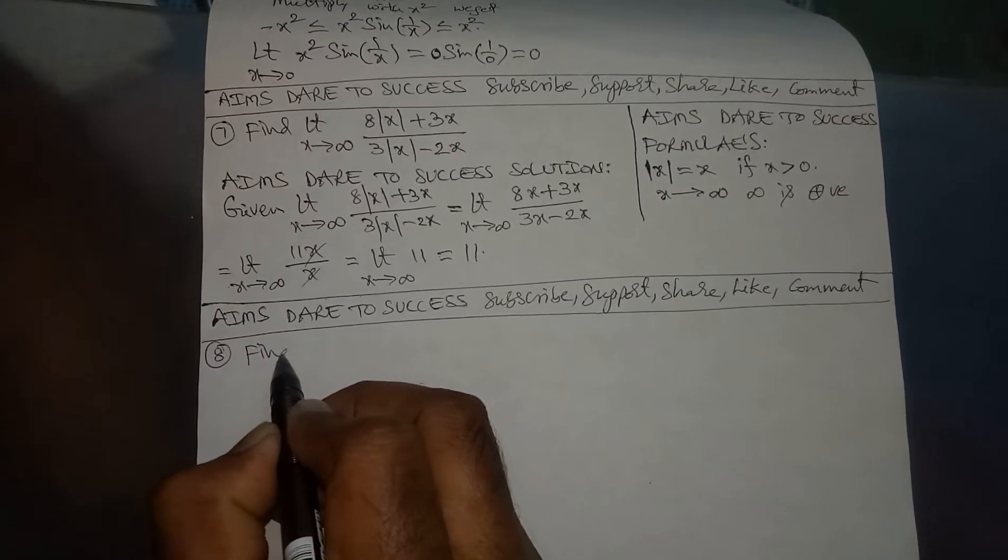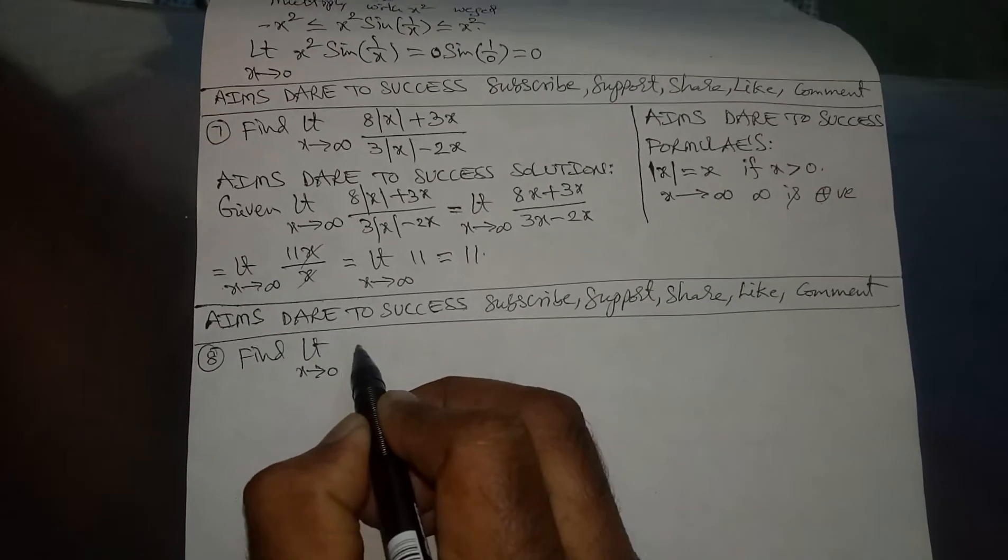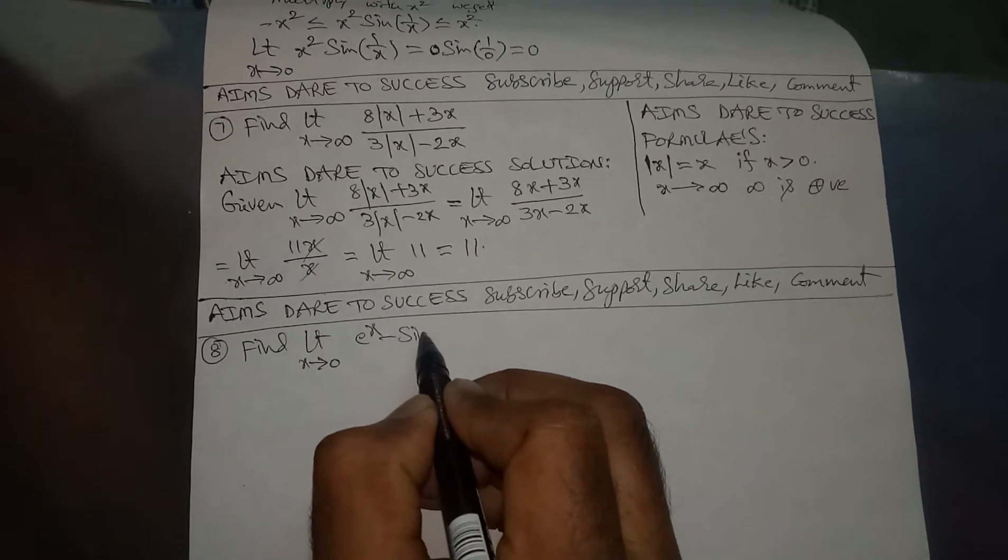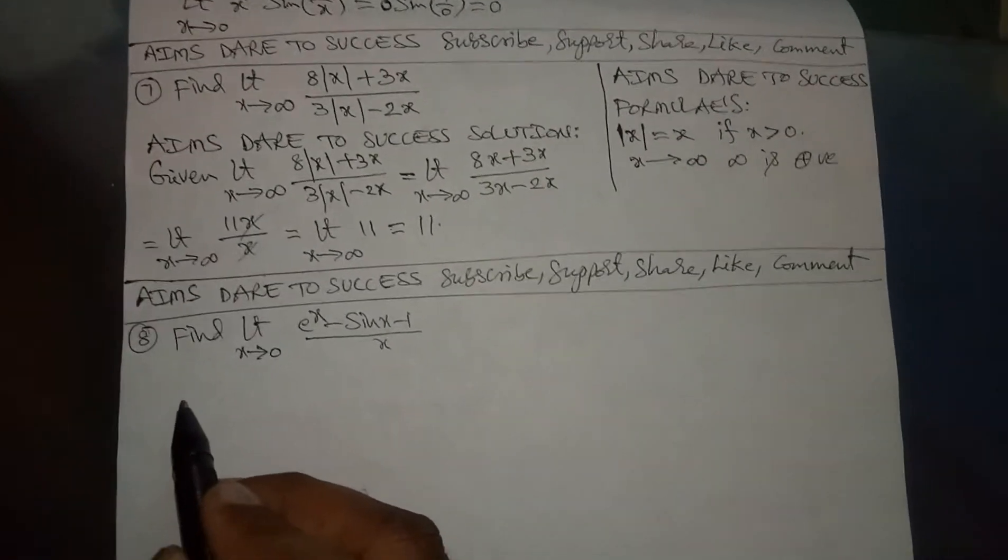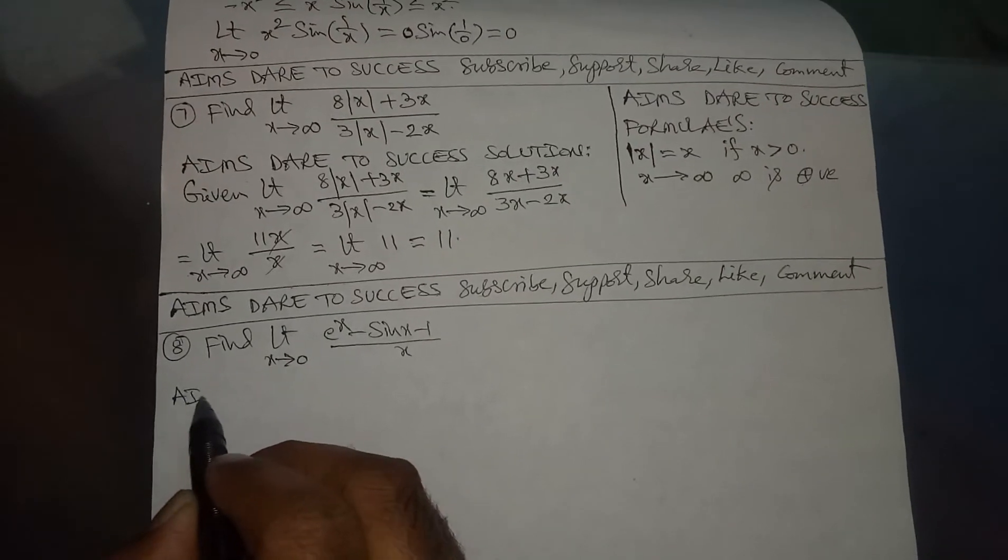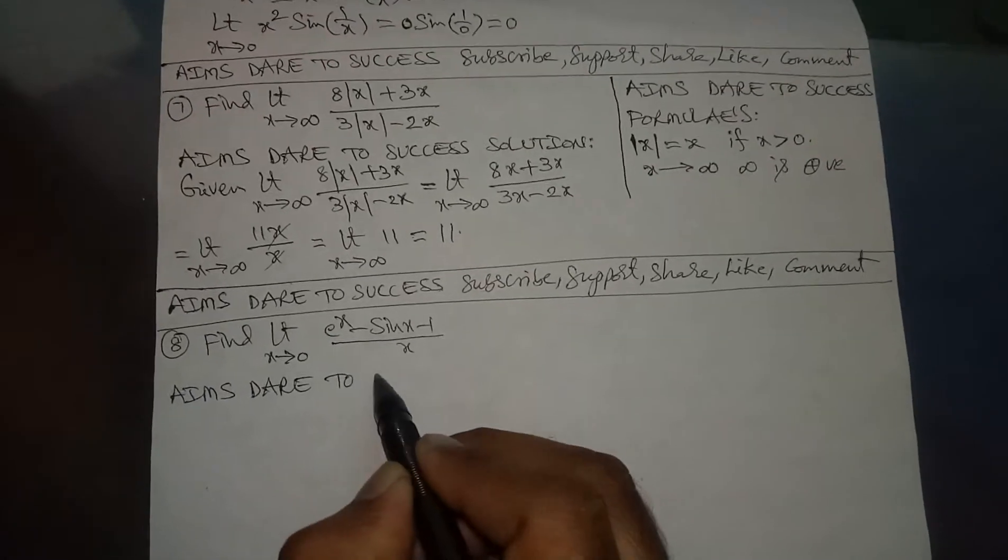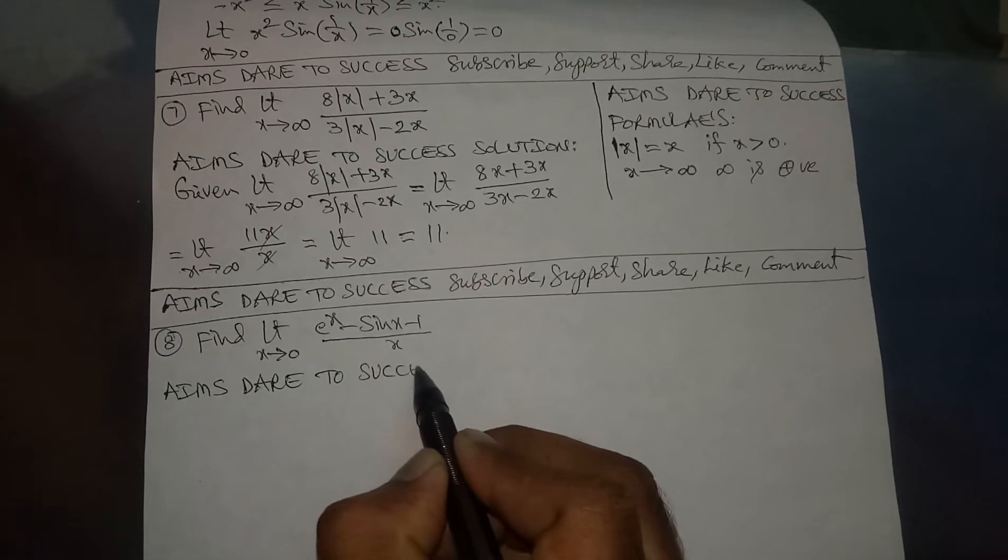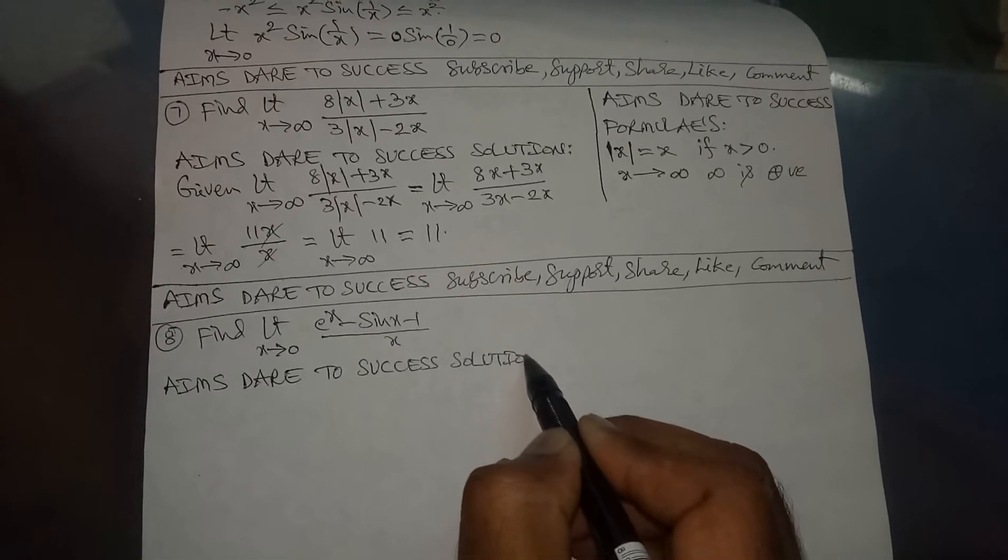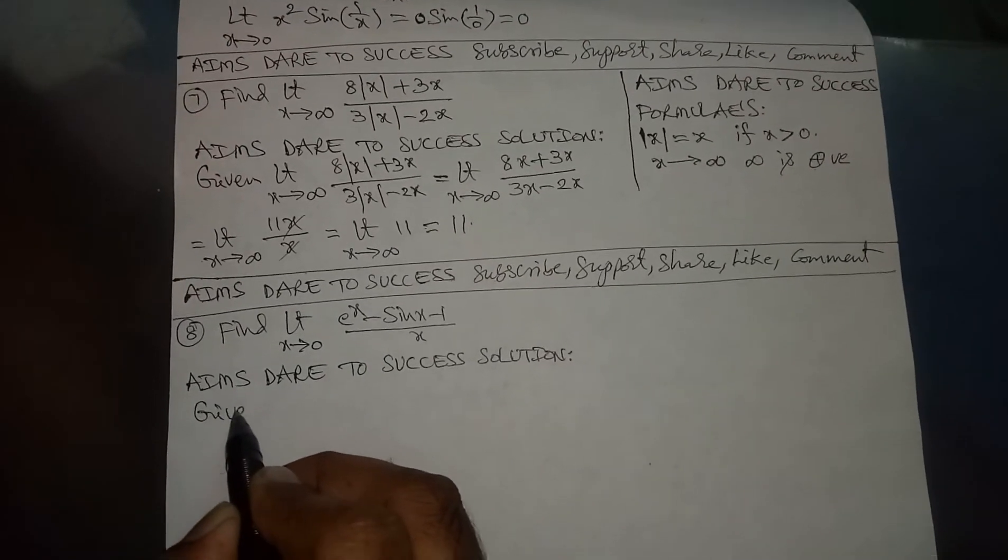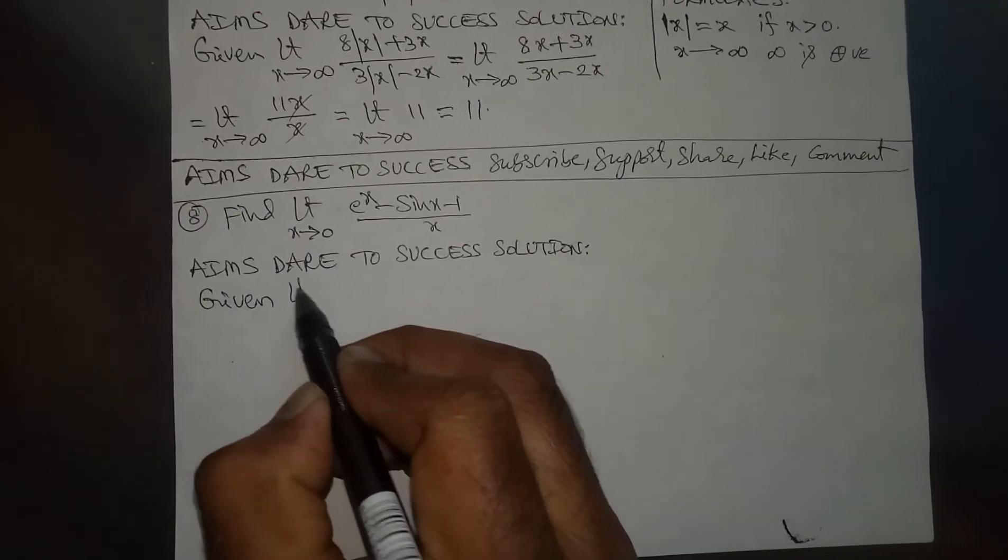Find limit x tends to 0 of (e^x - sin x - 1) / x. AIMS DARE TO SUCCESS. Solution: Write given value. Given value is limit x tends to 0 of (e^x - sin x - 1) / x.